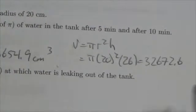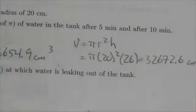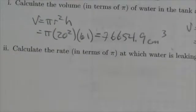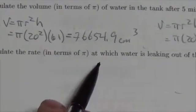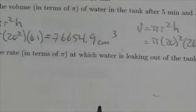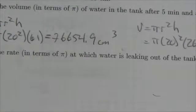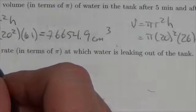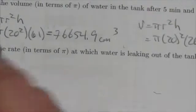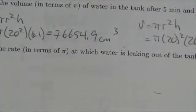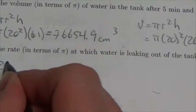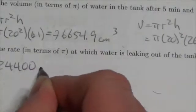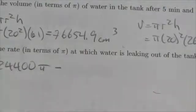So then it says next one is calculate the rate in terms of π at which water is leaking out of the tank. Okay, so I should have left the π in there. So this was going to be 20 squared times 61, so this will be 24,400π.